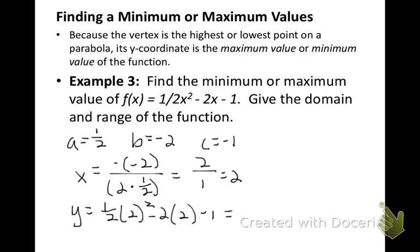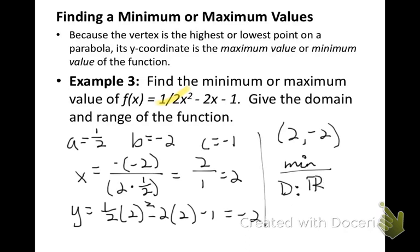The formula gives us positive 2 divided by 1, so the x value of the vertex is 2. Plugging 2 into the equation gives y equals negative 2, so the vertex is (2, negative 2). Since the a value is positive, the graph is opening up, meaning this point is a minimum. The domain is all real numbers, and the range is y greater than or equal to negative 2.